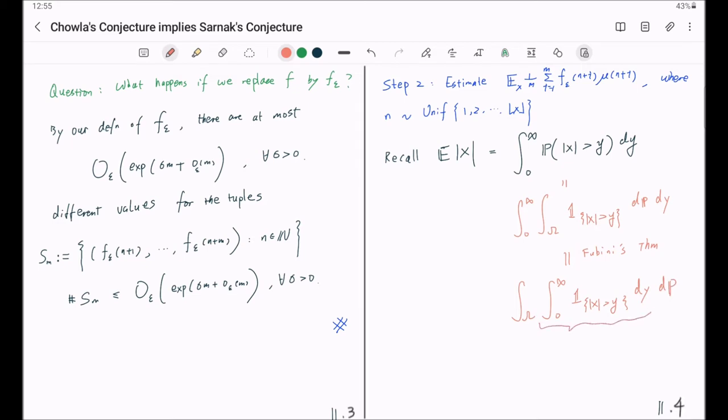Now what is this part? This part is precisely the absolute value of x. So you get the integration of the absolute value of x against dp, which is precisely the expectation of absolute value of x.